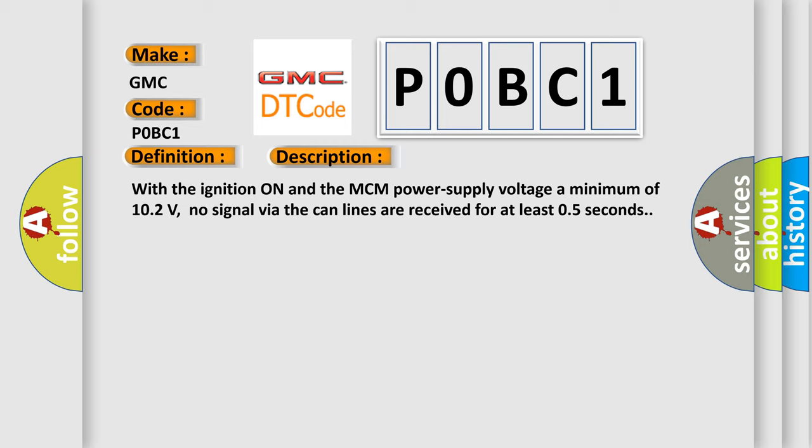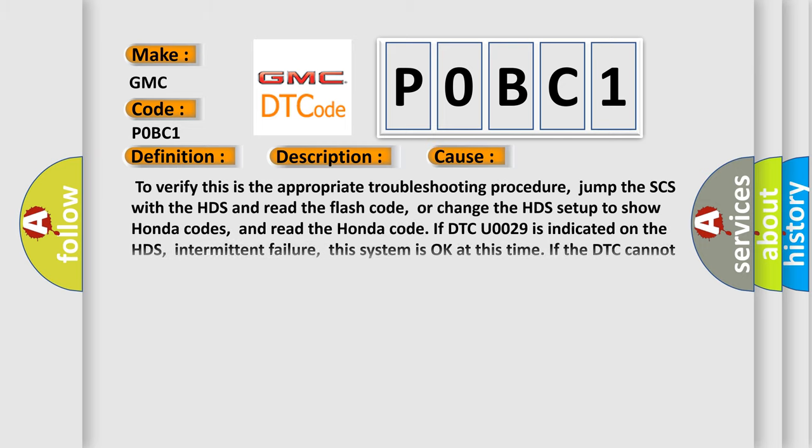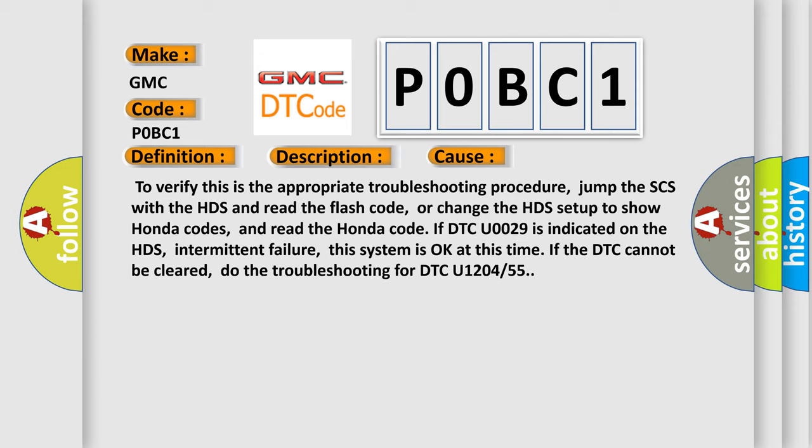This diagnostic error occurs most often in these cases. To verify this is the appropriate troubleshooting procedure, jump the SCS with the HDS and read the flash code. Or change the HDS setup to show Honda codes, and read the Honda code. If DTC U0029 is indicated on the HDS, intermittent failure, this system is okay at this time. If the DTC cannot be cleared, do the troubleshooting for DTC U1204 or 55. The Airbag Reset website aims to provide information in 52 languages.